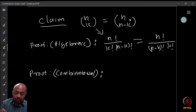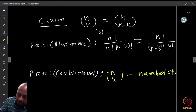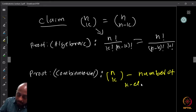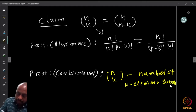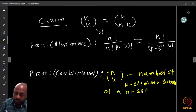By definition, n choose k is the number of k element subsets of an n element set. When I write 'n set' it means an n element set.